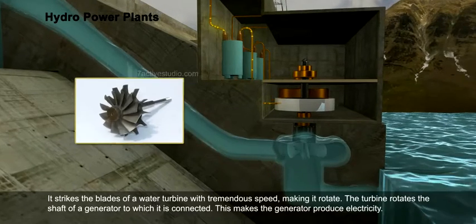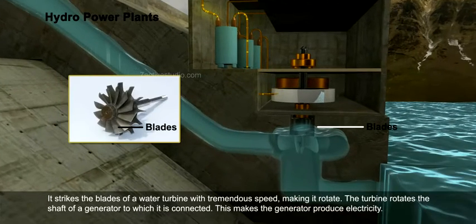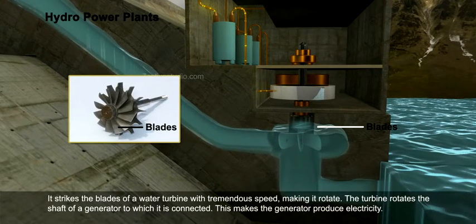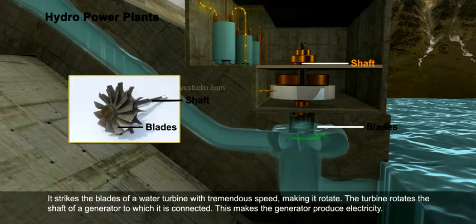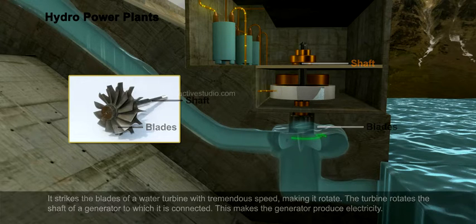The water strikes the blades of a water turbine with tremendous speed, making it rotate. The turbine rotates the shaft of a generator to which it is connected, and this makes the generator produce electricity.